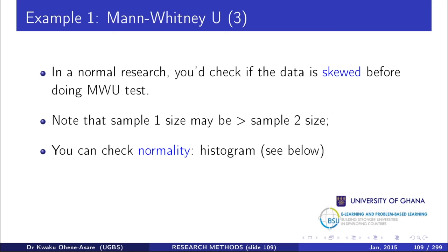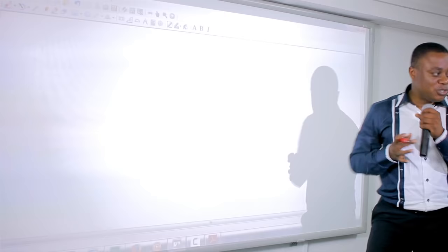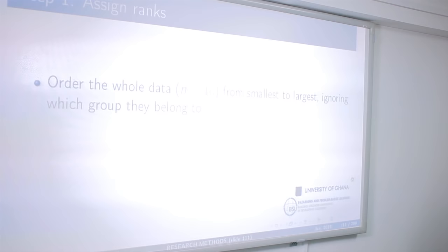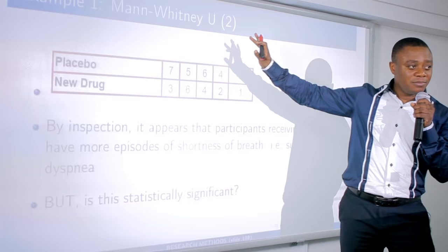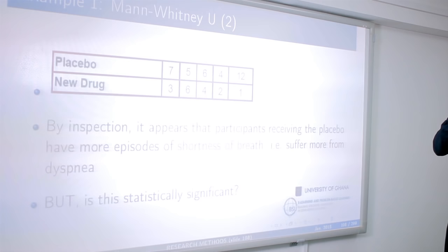To compute the Mann-Whitney U test, first organize the data from smallest to largest. Even if two values are the same, let them both appear. Move through the combined dataset and order all values.